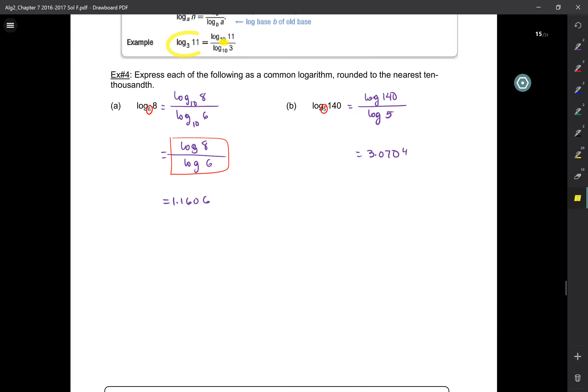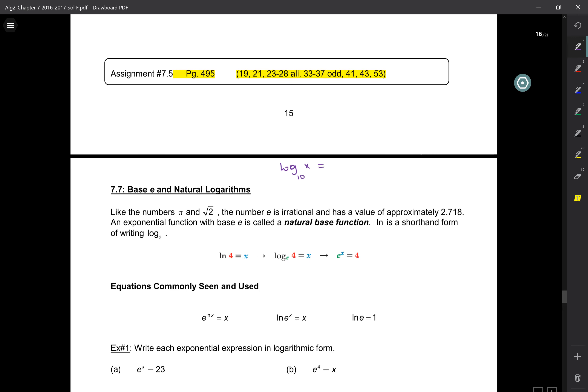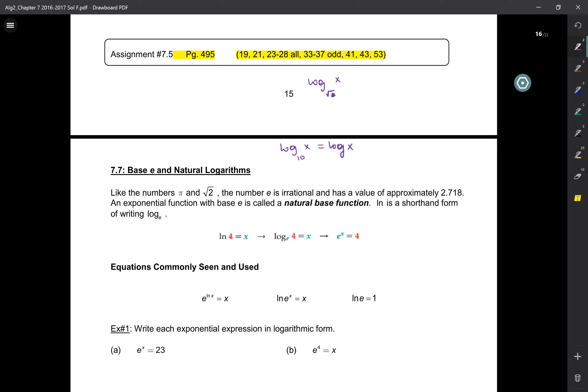So we're going to build on this stuff. Just like yesterday, we said when you have log base 10 of x, that makes it special in the sense that it's called a common log. We can omit writing the base 10 and just get away with writing log of x. Similarly, we also said yesterday that log could have any number as its base. Log could have even root 2 as its base, root 5 as its base, 5 over 7 as its base. Any number could be a base.